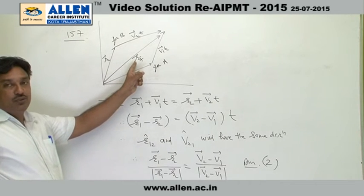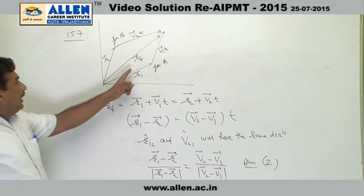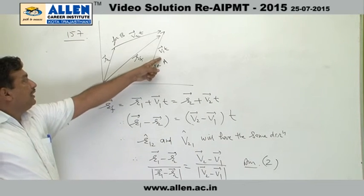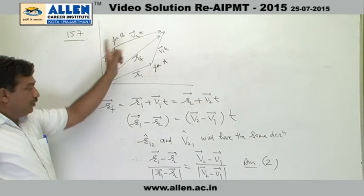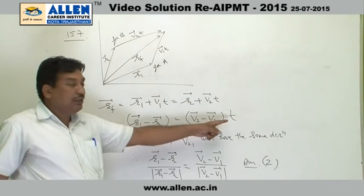So for collision, the final position vector should be the same. By vector triangle law, we can write down R final equal to R1 plus V1 t, and Rf equal to R2 plus V2 t. So that R1 minus R2 equal to V2 minus V1 into t.